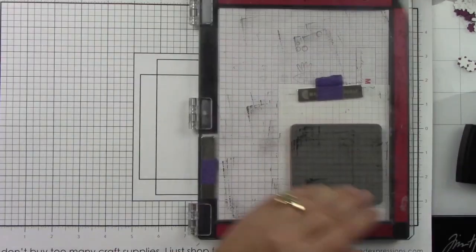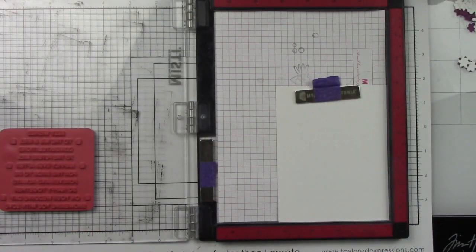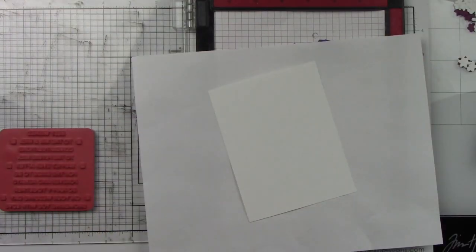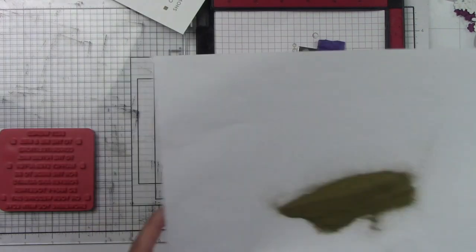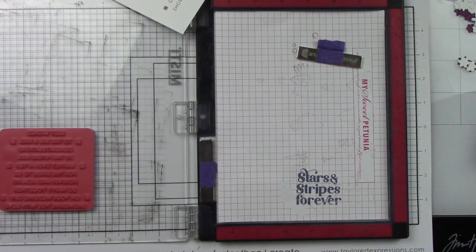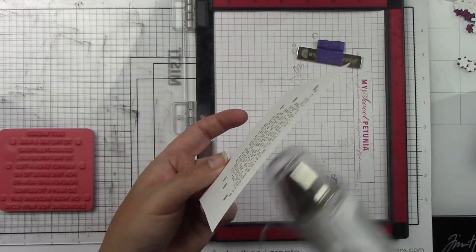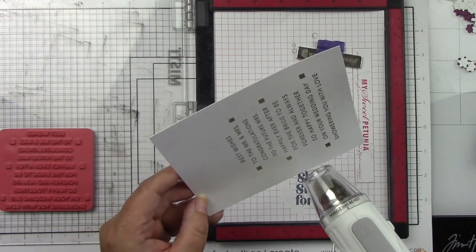So I'm going to ink that up with my Versamark ink in my MISTI. I did have to take out the foam insert in my MISTI because these are red rubber stamps so they are thicker. I'm going to sprinkle on that gold embossing powder and then heat that until it's nice and melted with my heat tool, and it will be shiny if it's melted properly.